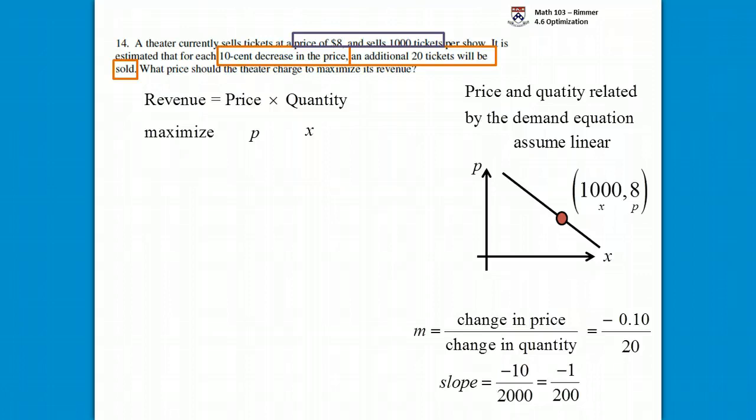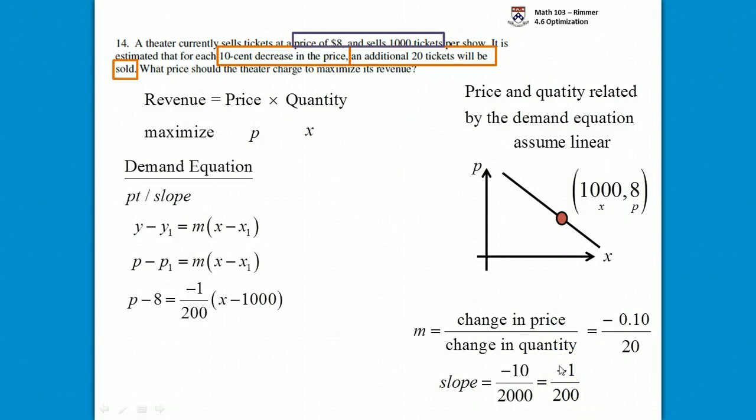What we're going to do is find the demand equation to see how price and quantity are related. The demand equation will go with point slope formula. We have a point and we have a slope. The formula for point slope is y minus y1 is m times x minus x1, but we're going to go with p minus p1 is m times x minus x1. Our p1 is 8, our x1 is 1,000. So we plug those guys in and we get this equation: p minus 8 is equal to negative 1 over 200 times the quantity of x minus 1,000.